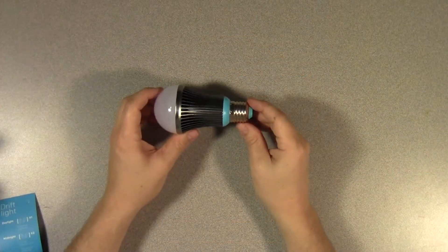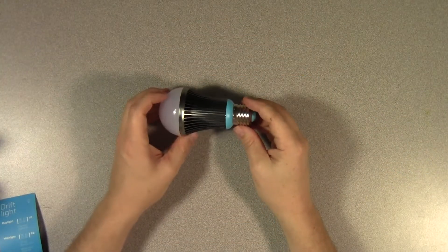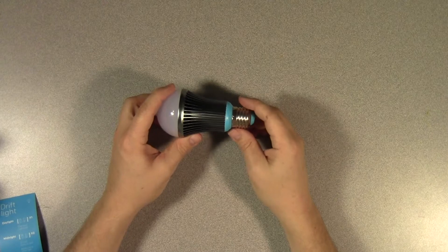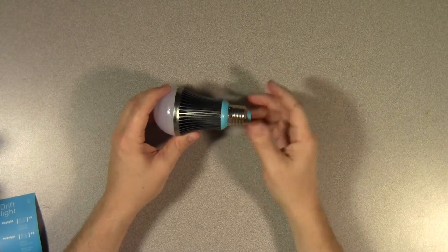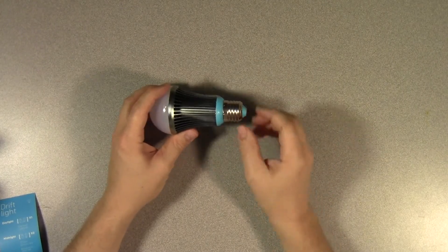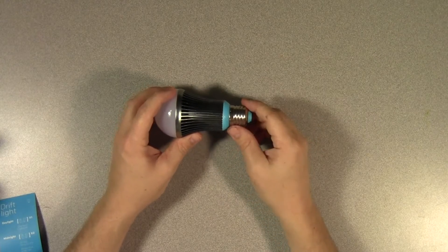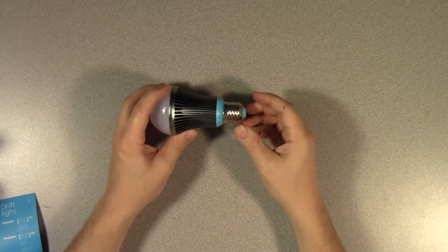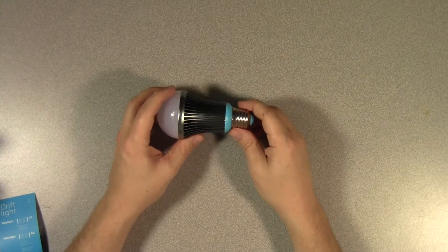So what sets this bulb apart from an ordinary LED bulb? Well, if you put it in a light fixture and hit the light switch, the light comes on just as you'd expect it to. There is just a tiny bit of delay, maybe half a second before the light comes on. That might clue you into the fact that there's something different about this bulb.